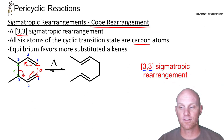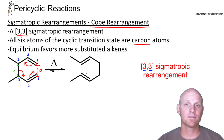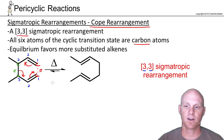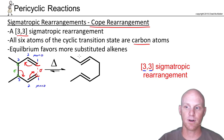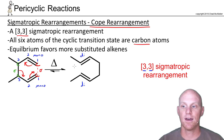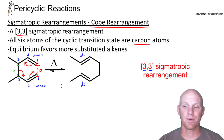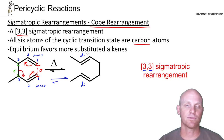Usually it's just alkene stability that drives the equilibrium. Looking at our alkenes, on one side we have monosubstituted alkenes, but on the other side we have disubstituted alkenes. The more substituted alkenes are more stable, and that's why the equilibrium is definitely shifted to the right, favoring formation of the products.